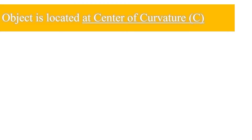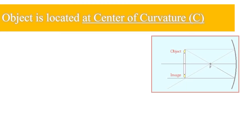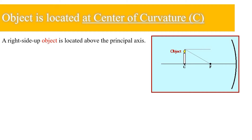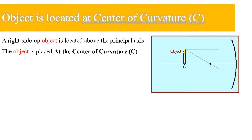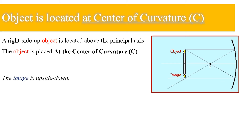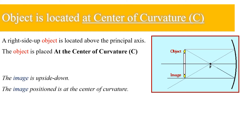Let us have the next example with the object located at the center of curvature. A right-side-up object is located above the principal axis, placed at the center of curvature. The image is upside down and the image position is at the center of curvature.